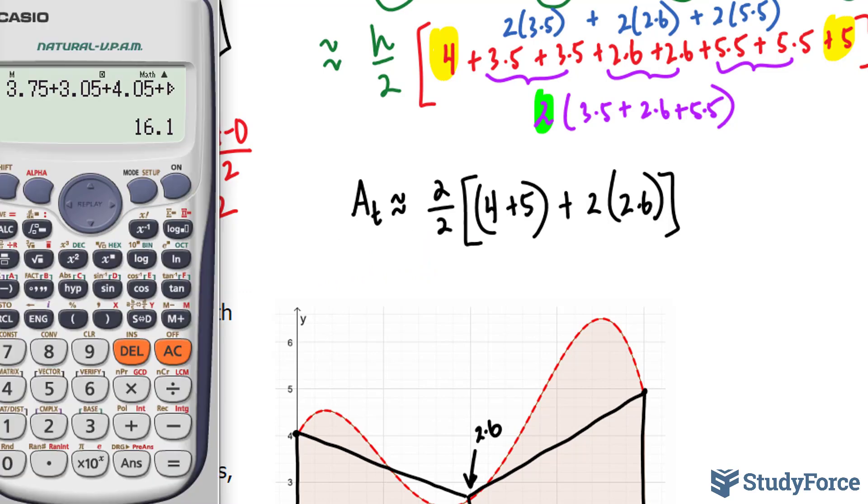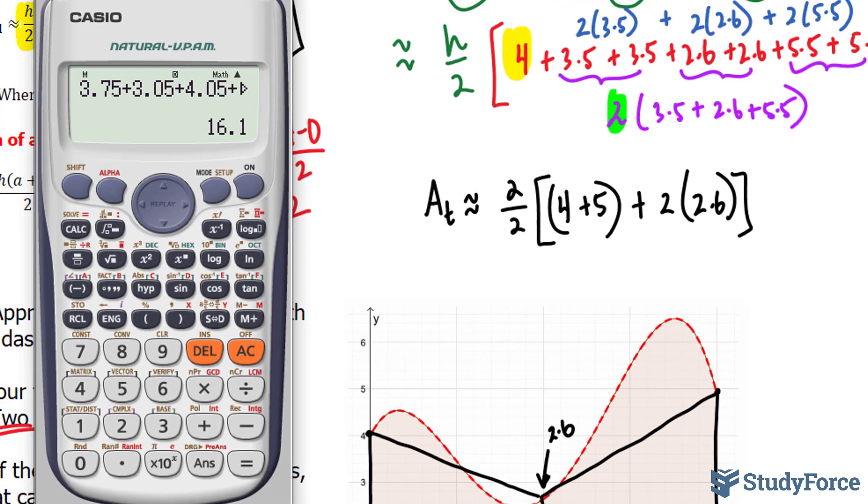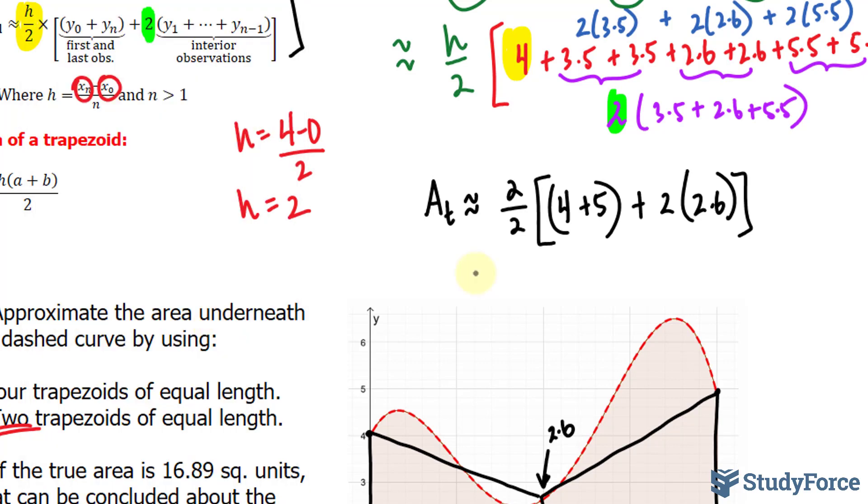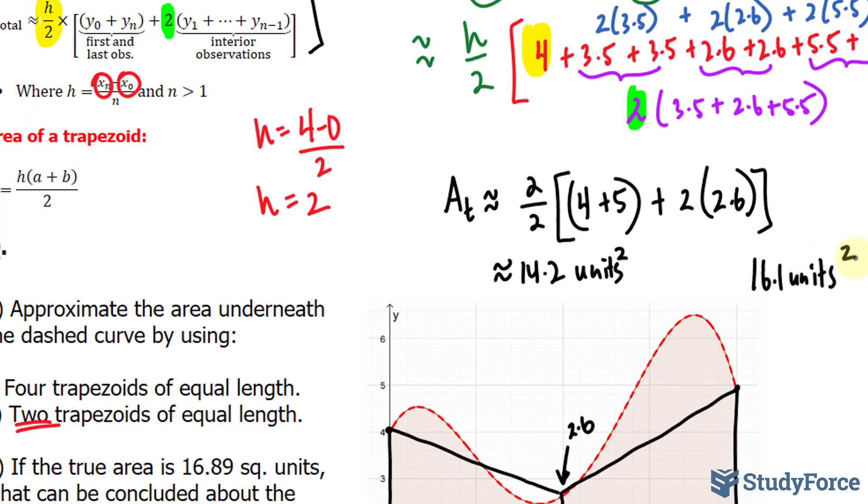And we'll go ahead now and use our calculator to find this. 2 divided by 2 is 1 times 4 plus 5 is 9 plus 2 times 2.6. And we end up with an answer of 14.2. And that's considerably lower than our previous finding, which was 16.1. I'll just write that down for reference. 16.1 was the area we found when we used 4 trapezoids. That answers question A. Let's move on to question B.